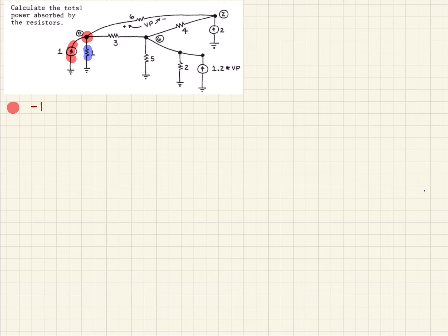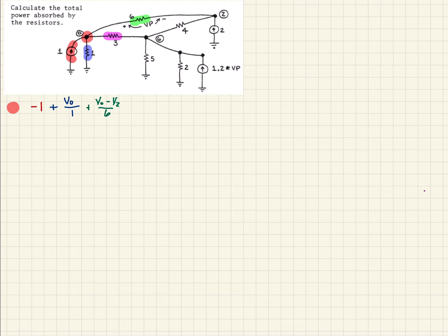Next we have the one-ohm resistor, so invoking Ohm's Law, that's V0 over one. Then we've got this resistor, which we can write as the difference between V0 and the voltage at node two, divided by six. And finally there's this branch with the three-ohm resistor, written as the difference between V0 and the voltage at node six, divided by three. That's all the branches at that node, so we set the sum equal to zero.